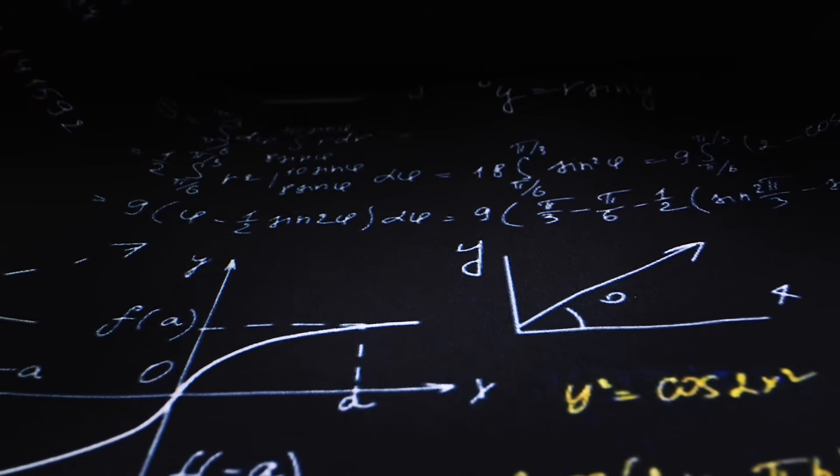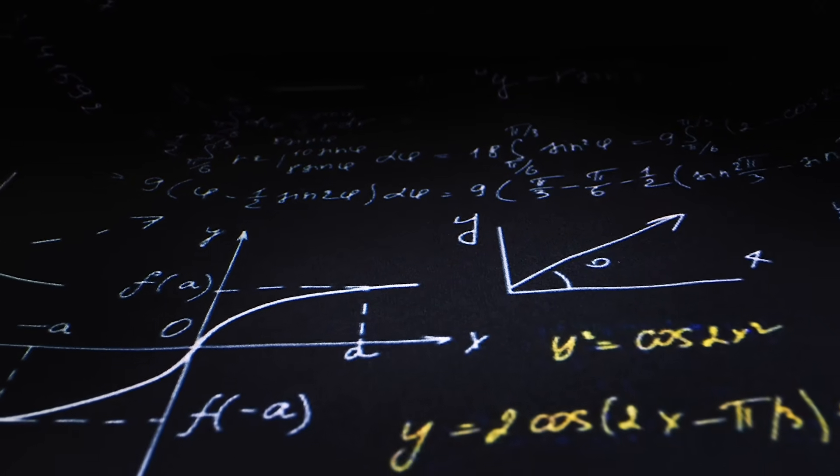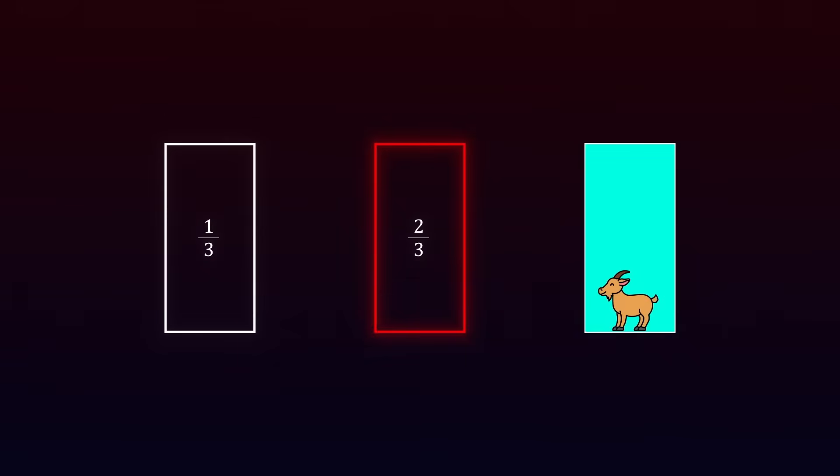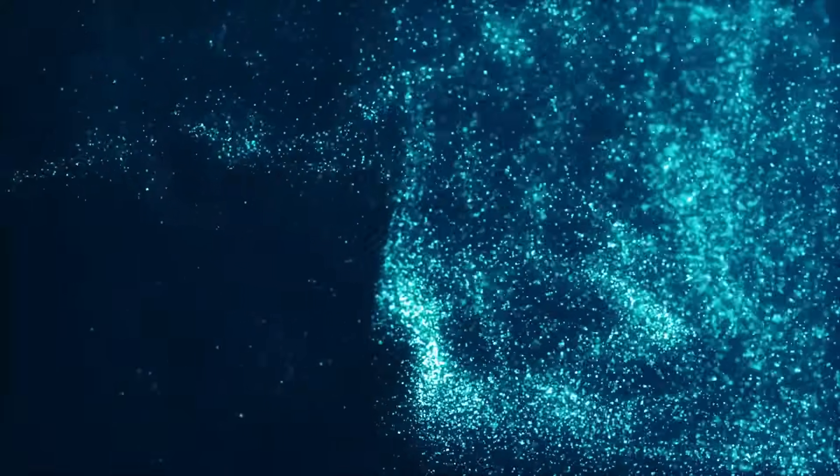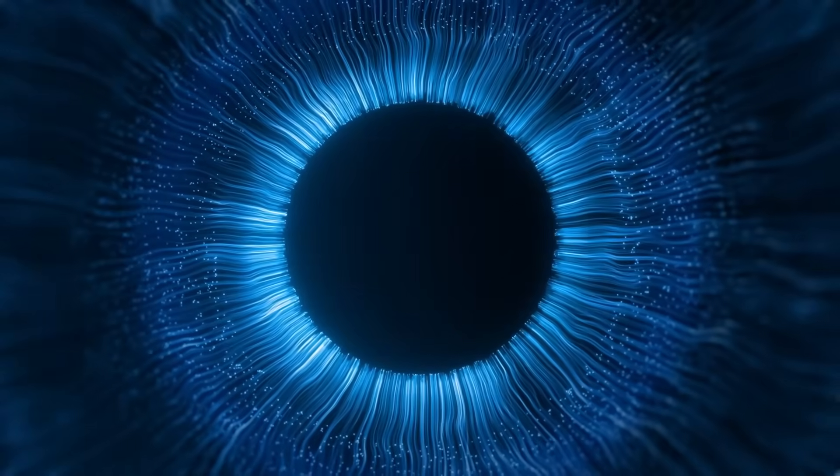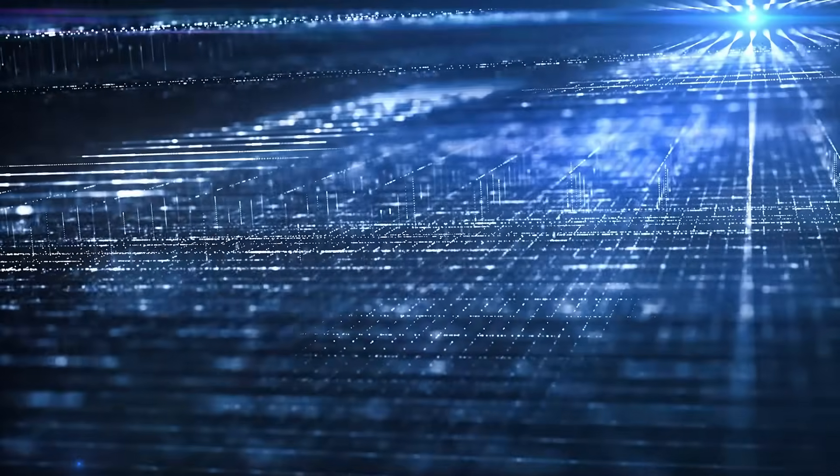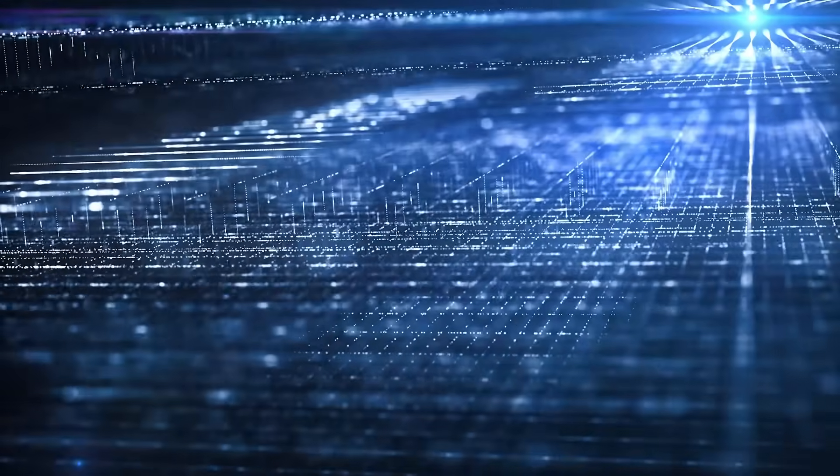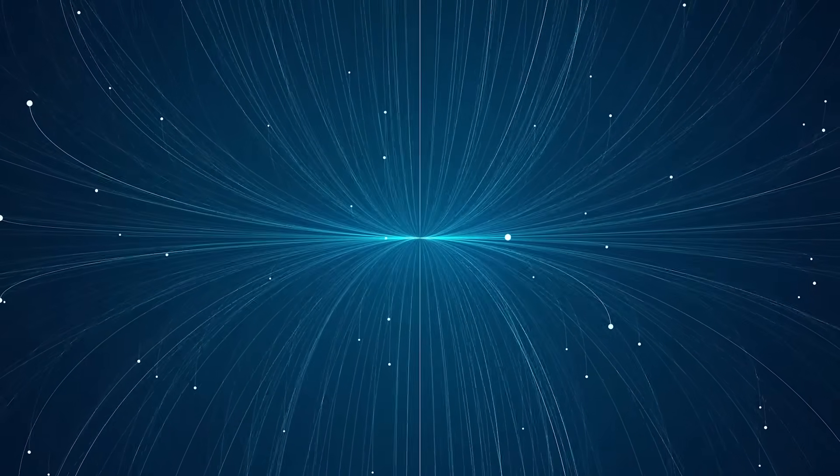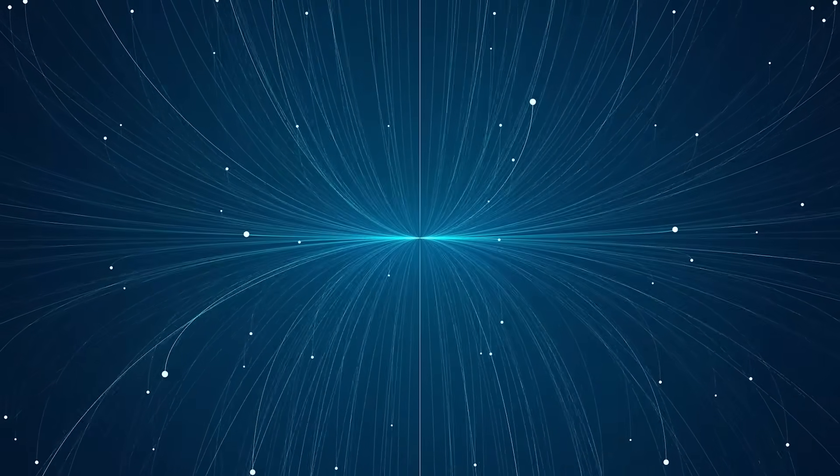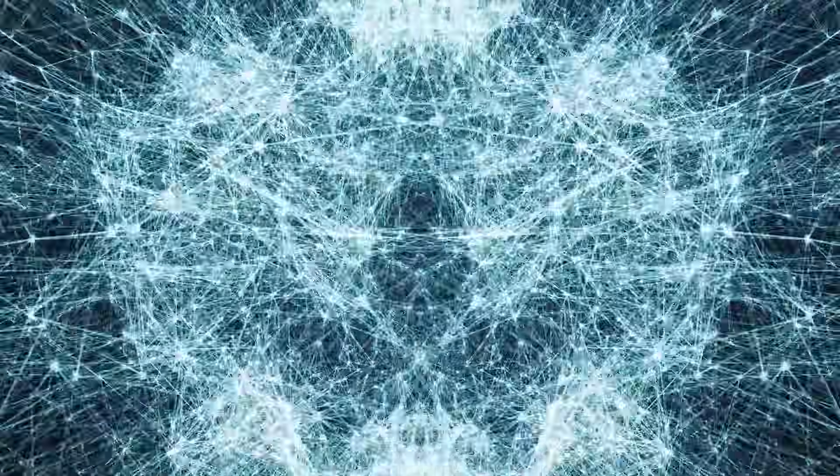For those who can trust the abstraction and focus solely on the math, the solution becomes clear. Switching gives you a 2 in 3 chance of winning, while staying leaves you with only 1 in 3. The math doesn't lie, and it provides an undeniable answer. But for those who remain tied to the narrative, where Monty's reveal feels like a random event that resets the game, the solution feels wrong no matter how it's explained. They focus on the story instead of the probabilities, and as a result, the logic never quite clicks. But this paradox is about more than just a game, it's a reflection of how we approach complex problems in everyday life.